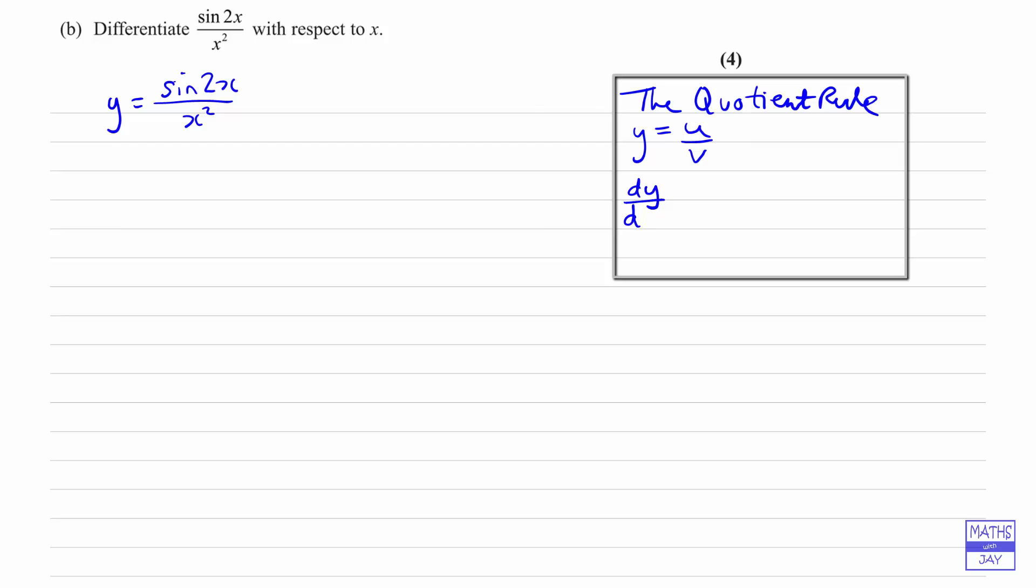Here, unlike with the product rule, the order matters. So we've got u over v, and when we differentiate we're going to get v times du by dx minus u times dv by dx, and then all of that is divided by v squared.